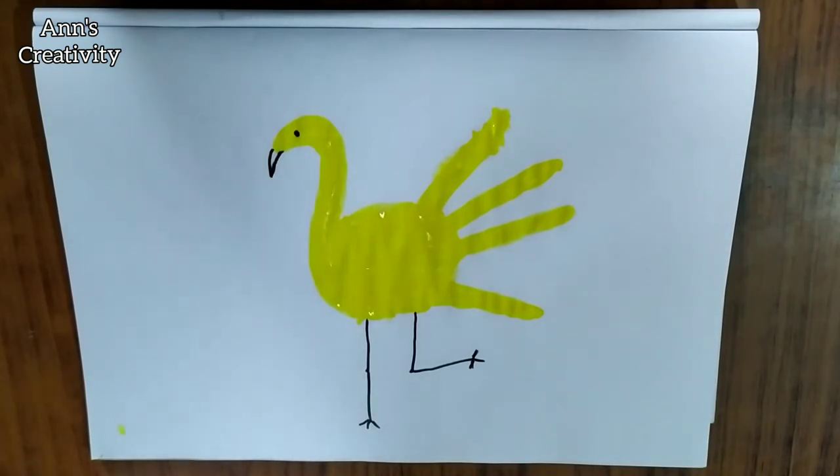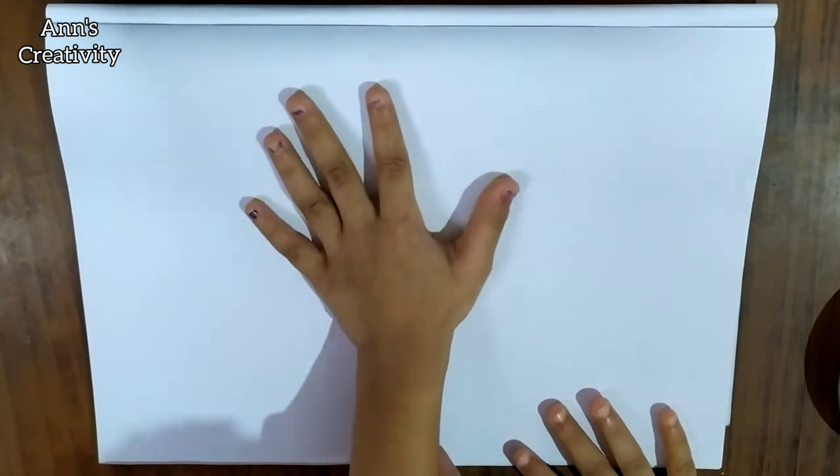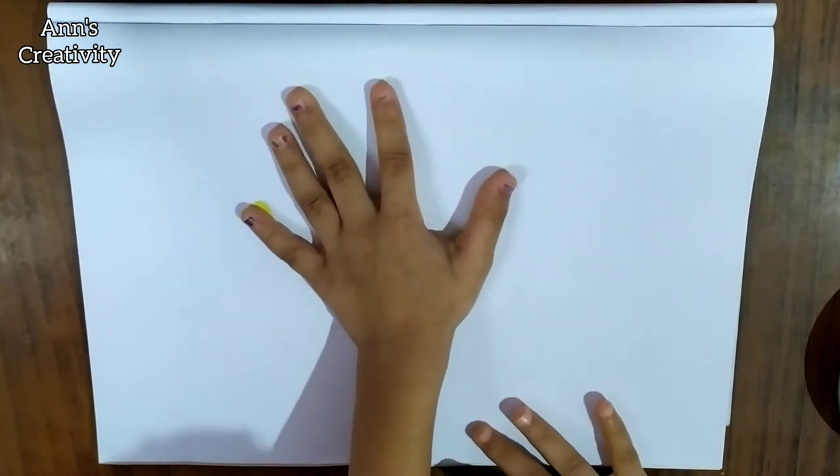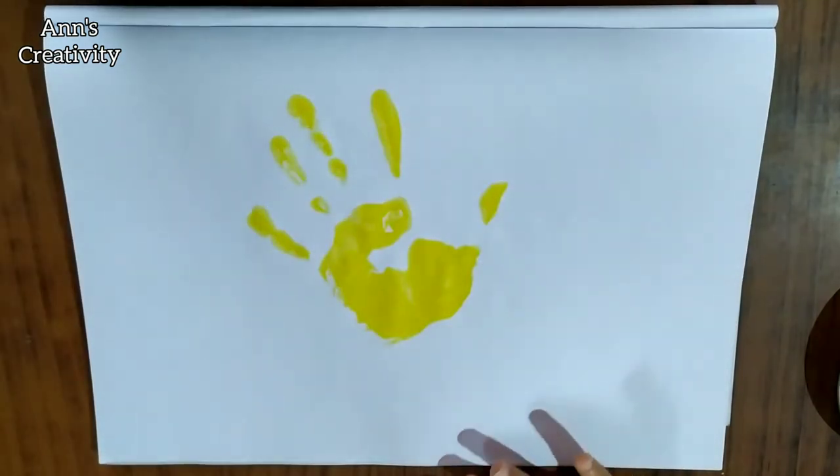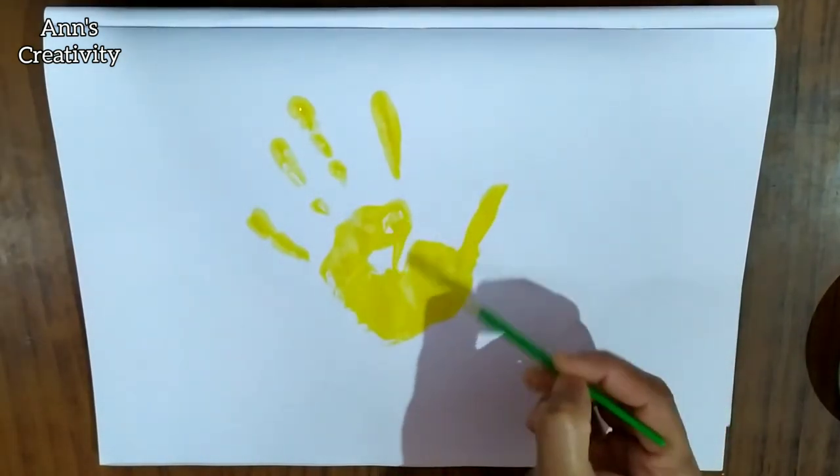Next we are going to draw a hen. Apply paint on the palm, then keep it in the paper. Again draw the head and legs.